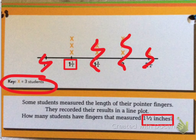We need to skip count by 3s: 3, 6, 9. So how many students had pointer fingers that measured 1 1⁄2? The answer would be 9.